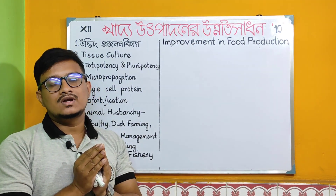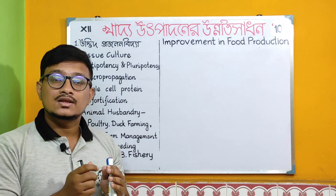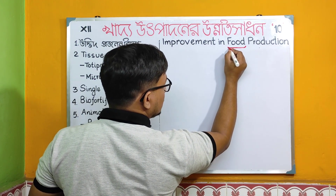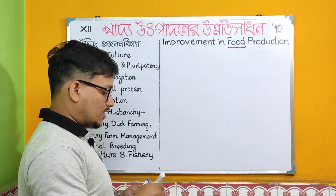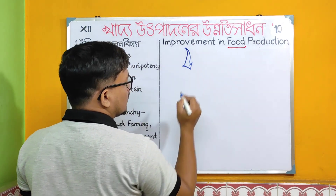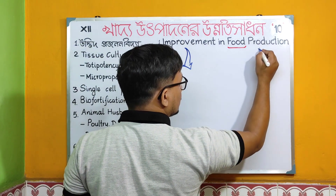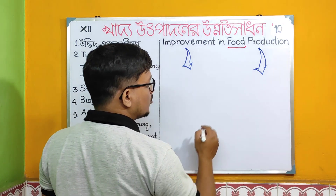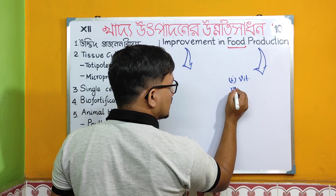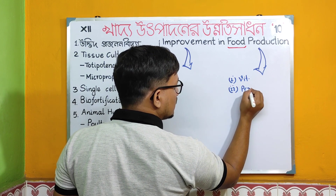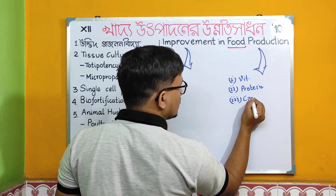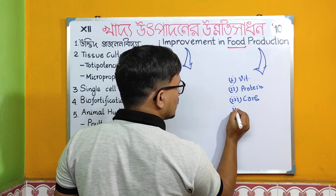The field is used to improve food production. The chapter is totally about food improvement. The first improvement strategy is in the field of food production. Whatever we act on first is vitamin content, second is protein content, then carbohydrate content, and lipid content.